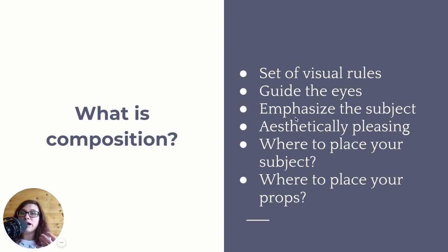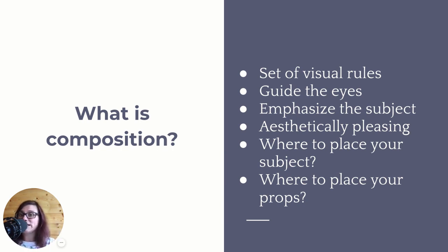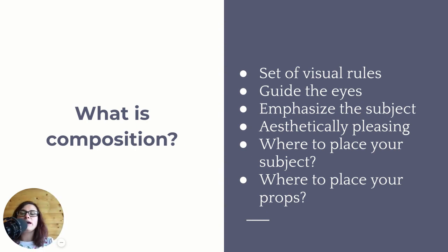These rules of composition are used to emphasize the subject and to make our image aesthetically pleasing. They also help because they tell us where we need to place our subject and where we need to position the props around our subject, so that we don't distract from the subject but just add to the story. By doing that, we guide the eye of the viewer through a visual journey that helps us tell the story the way we want the viewer to see it.